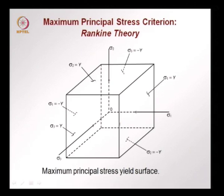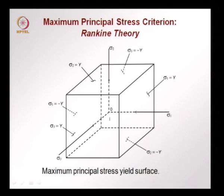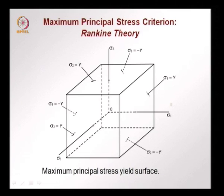The Rankine yield surface is a square in two dimensions with σ3 = 0. In the case of a multiaxial stress state where σ3 is also non-zero, instead of a square yield surface we have a cubic yield surface. Again the surfaces are defined by the yield strength, for example σ1 = y. As long as the stress state point defined by σ1, σ2, σ3 is inside this cube, yielding has not occurred. As stress increases and the point reaches the yield surface, failure is said to occur.